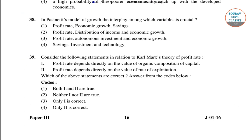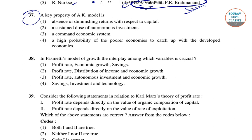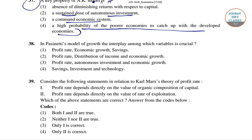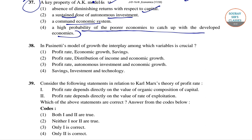In question number 37 it is given: a key property of the AK model is what? Four options are given: absence of diminishing returns with respect to capital; sustained dose of autonomous investment; a common economic system; and a high probability of poorer economies catching up with developed economies. The right answer is the absence of diminishing returns with respect to capital.